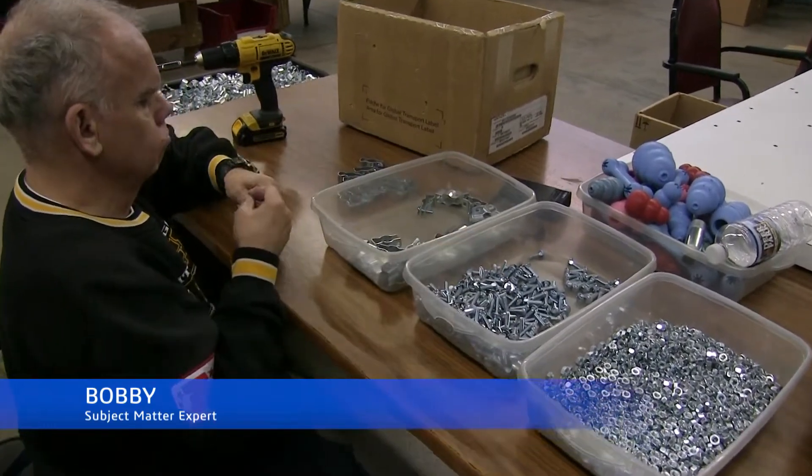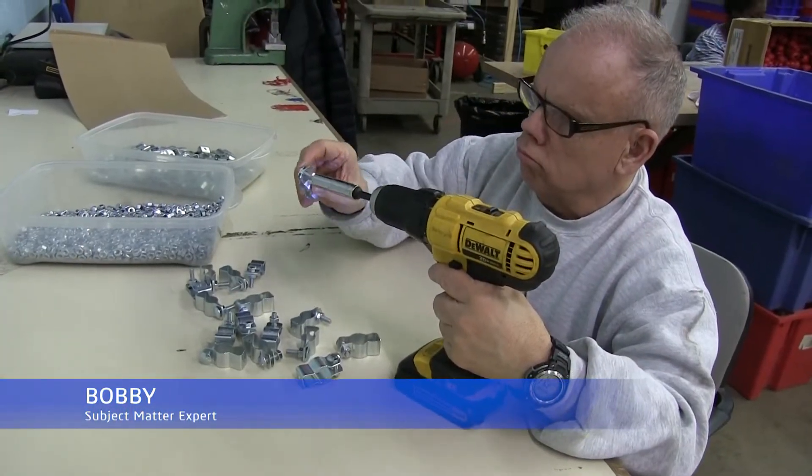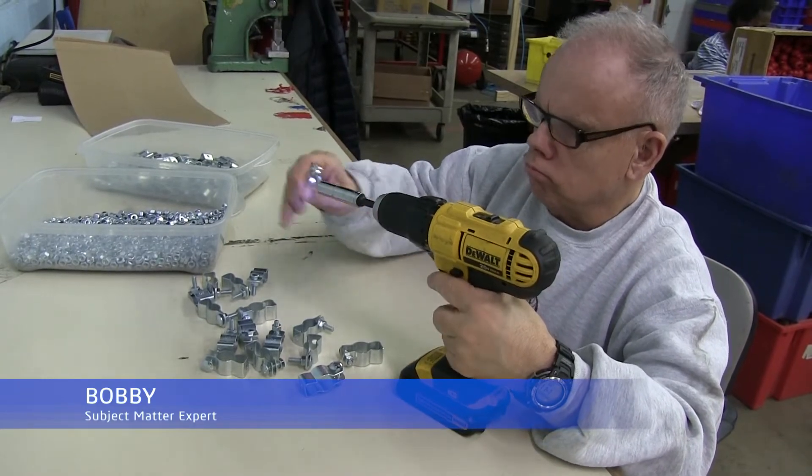Then they grab a nut from the nut bin and screw it on the bolt. Finally, they screw down the nut to meet the face of the bracket using a cordless drill. This process requires a lot of dexterity and patience.